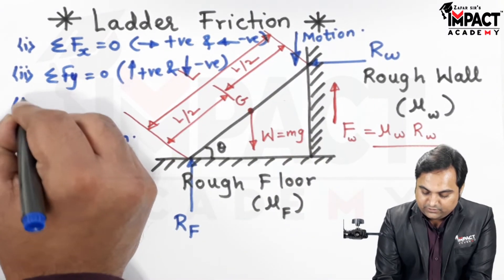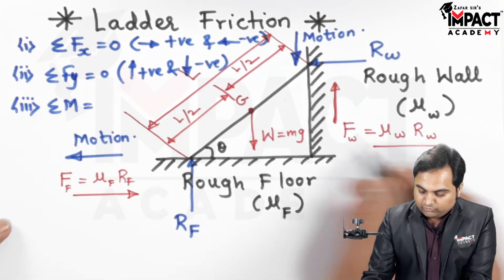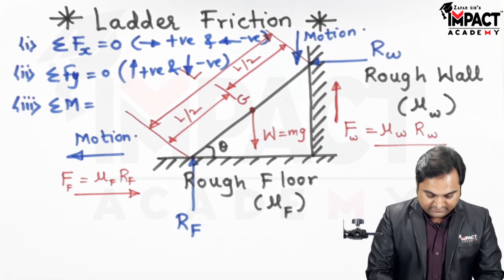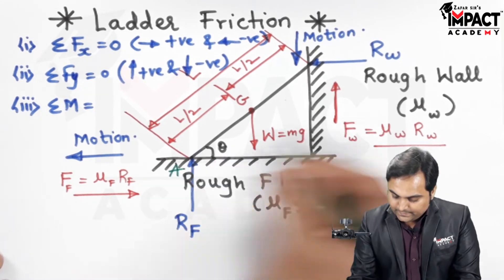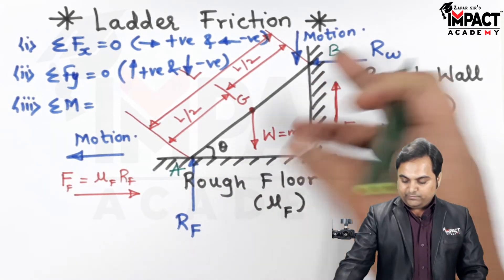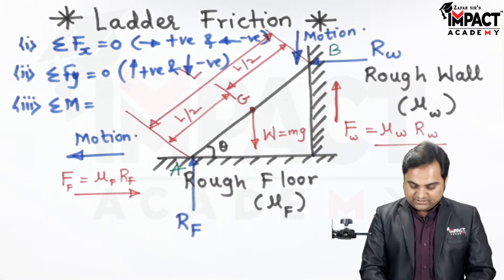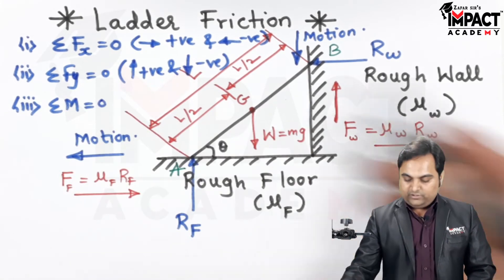Then we can use the last condition, which is summation of moment about either, I can say, at the floor this is contact point A and at the wall it is B, so either we can calculate the moment about A or about B in order to calculate the reactions. So summation of moment is equal to zero for equilibrium condition.